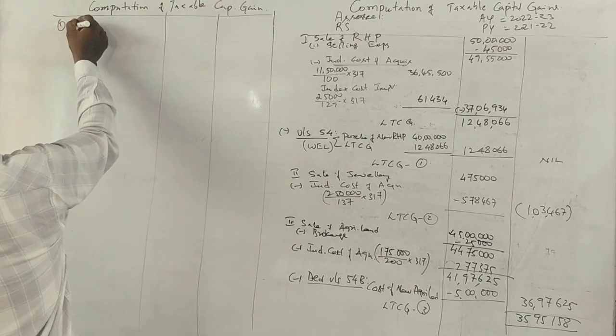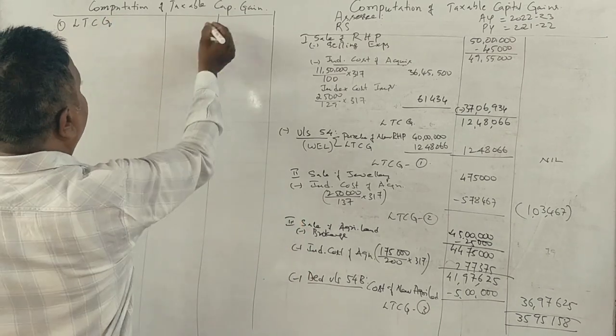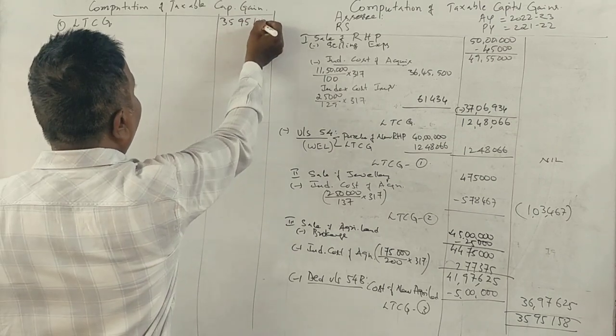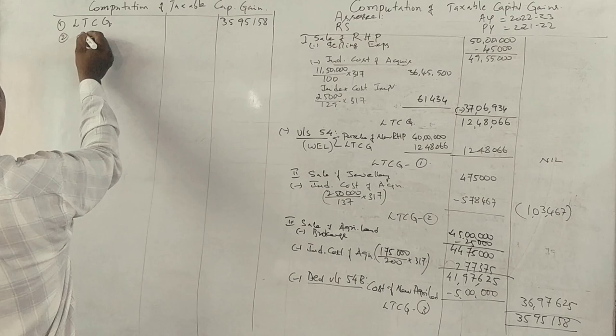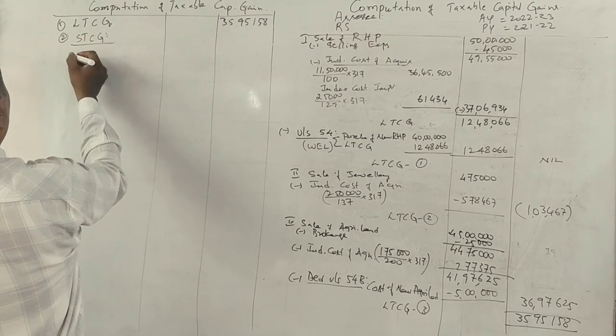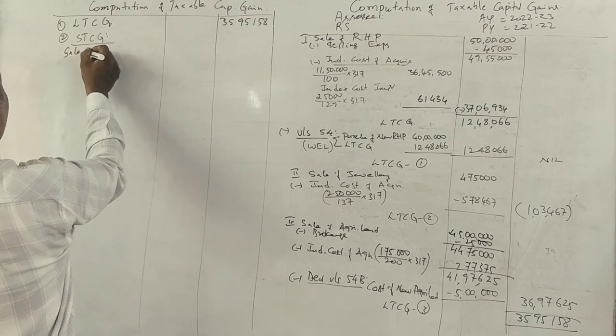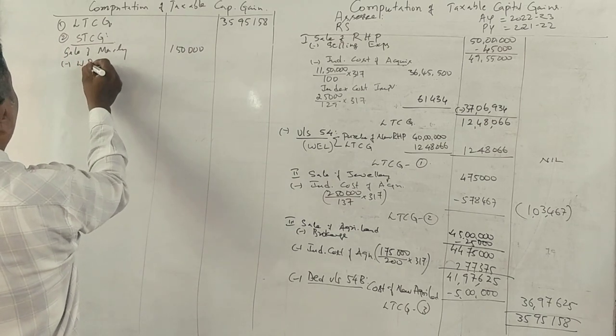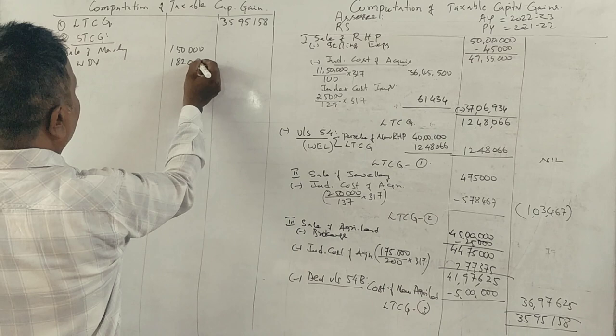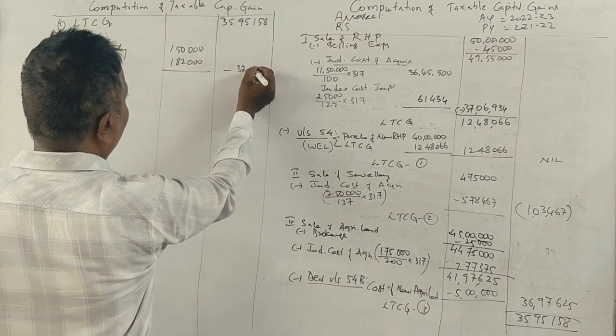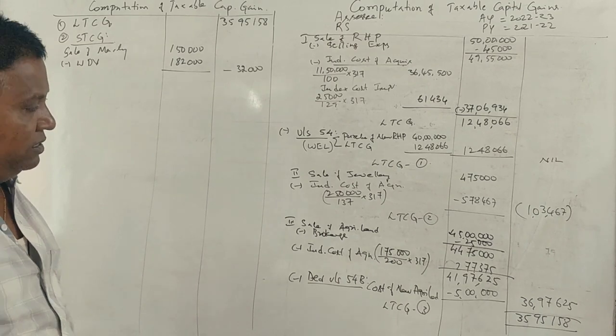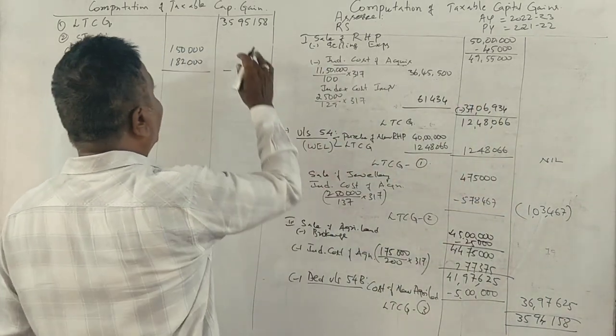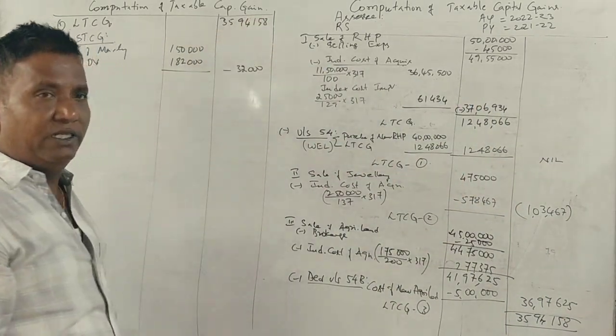This is the computation of taxable capital gain. What is short-term capital gain? Machinery sold for 1,50,000, written down value is 1,82,000, giving a loss of 32,000. Short-term capital loss is 32,000.